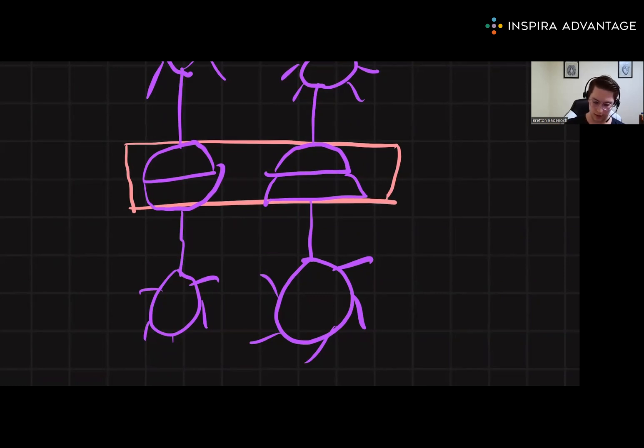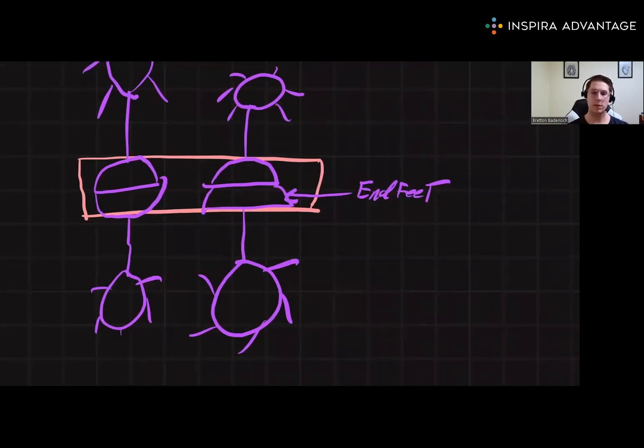The feet of the astrocytes are technically called end feet. Astrocytes form the blood-brain barrier by forming tight junctions with these end feet, and the AAMC loves to test this by asking what type of cell is injured when foreign substances that are typically excluded from the central nervous system are found in the brain. Well, if your astrocytes are dead, they're not going to be regulating the composition of fluid in the brain very well anymore. It's just going to be free-flowing out of the blood vessels.